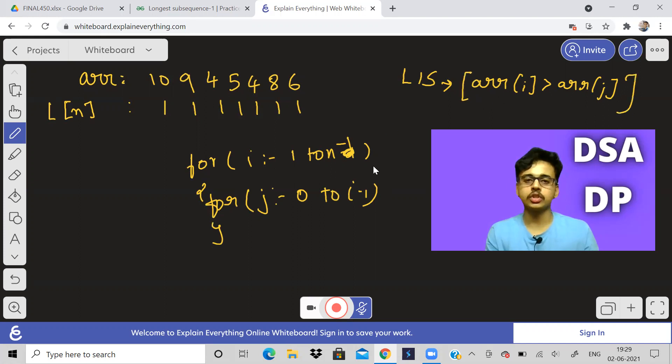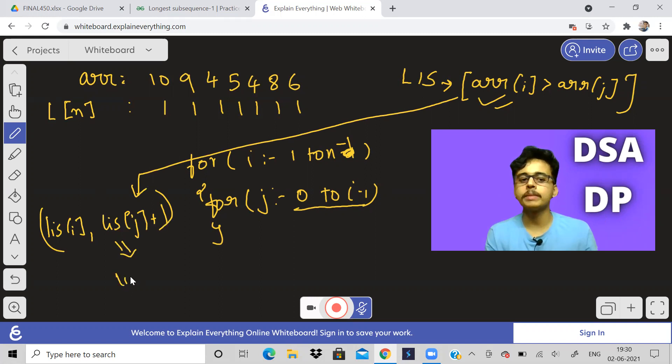So the nested for loop we used to run and we used to check this condition. This condition was checked because we wanted increasing subsequence. So we always knew that index I will be greater than index J. So we always wanted to find out whether this condition is true or not. So if this condition was true, what are we checking? We were comparing LIS of I with LIS of J plus one. We are comparing these two values and maximum of these two would be stored in LIS of I. Ultimately, maximum of all values in the LIS array.